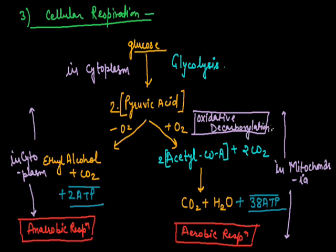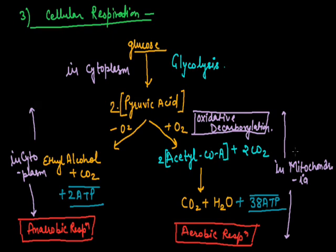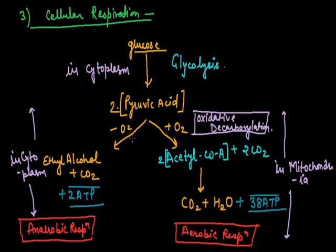Okay, I am just briefing the cellular respiration again. Glucose is first of all modified into pyruvic acid in cytoplasm by a process known as glycolysis. It's common for aerobic as well as anaerobic respiration.